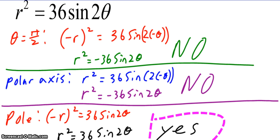Okay, so if I test for the line theta equals pi halves, I plug in a negative r and a negative theta. Negative r squared becomes r squared. If I plug in a negative theta, it's sine, so I can pull the negative out in front. R squared equals negative 36 sine of 2 theta is not the same as the original, therefore it is not symmetric to theta equals pi halves.